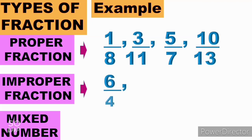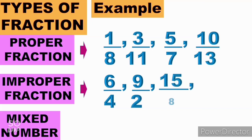For improper fractions, we have 6 over 4, 9 over 2, 15 over 8, and 10 over 3. As you can observe, the numerator is bigger than the denominator.